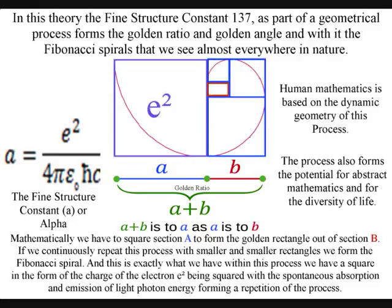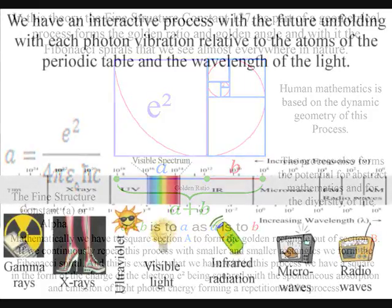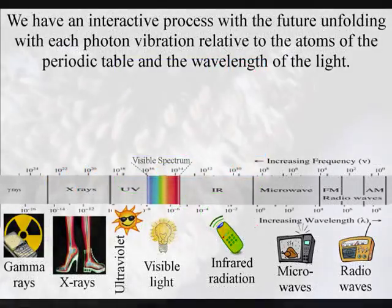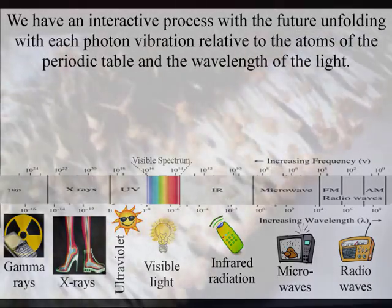And this is exactly what we have within this process. We have a square in the form of the charge of the electron being squared, with the spontaneous absorption and emission of light, photon energy, forming a repetition of the process.